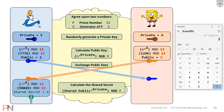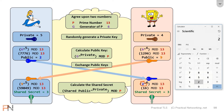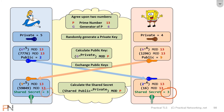Bob is now going to do the same thing, and hopefully he is also going to land on the number 3. He's going to take 2, which was Alice's public value, raise it to the fourth power — his own private value — and then figure out the remainder when divided by 13. The result will also be 3. Notice Alice and Bob landed on the same shared secret of 3, and anybody else listening in on the wire will have only heard the numbers 13, 6, 2, and 9 — and there's no way to combine those numbers to get the shared secret of 3.